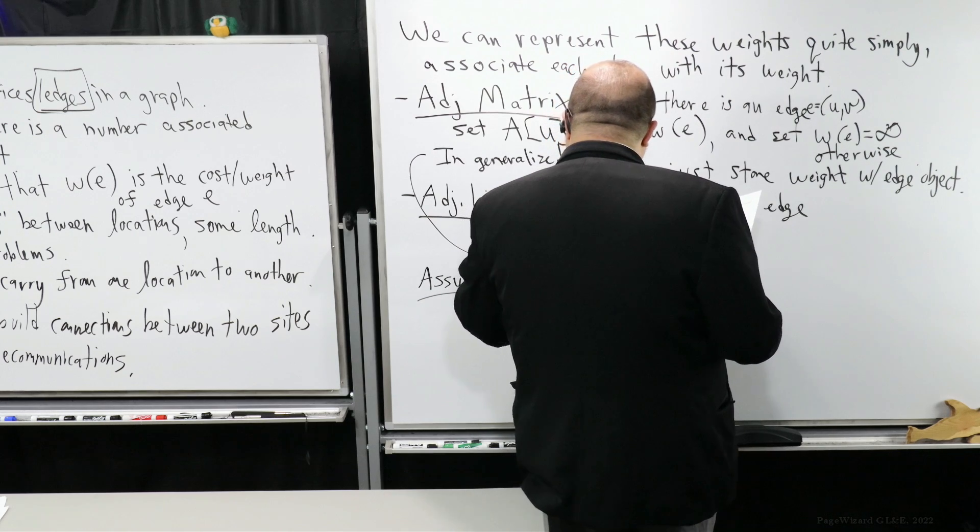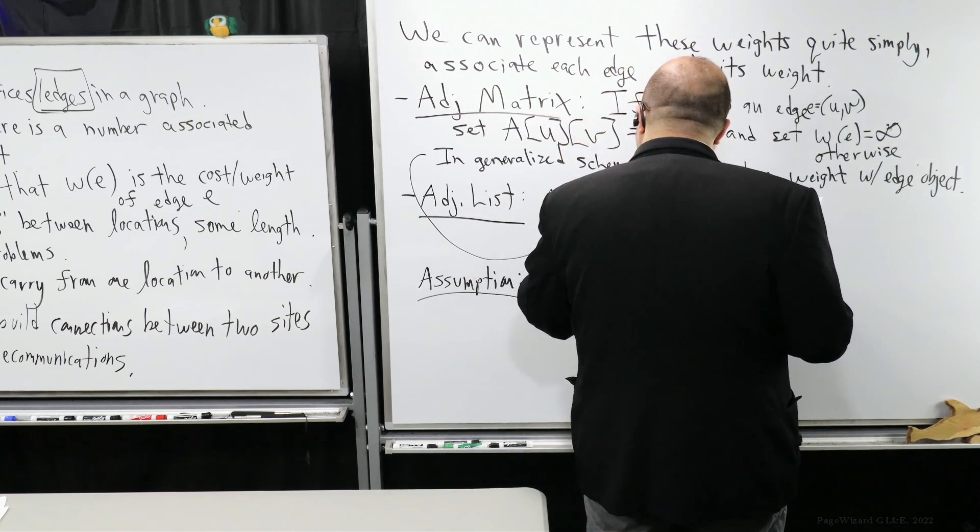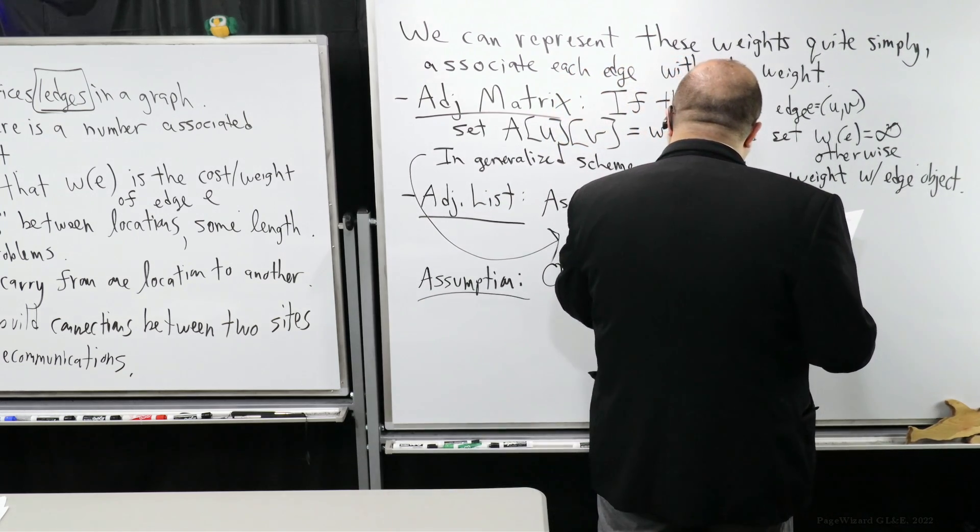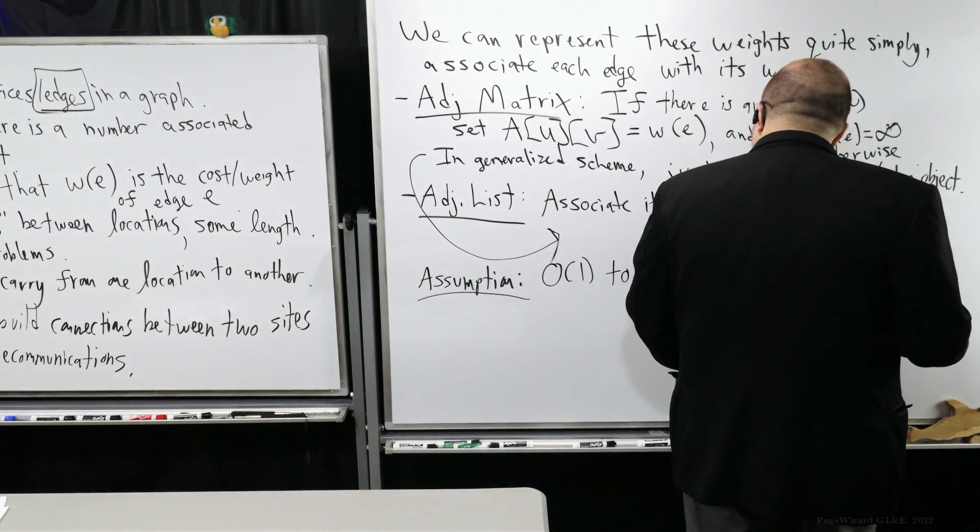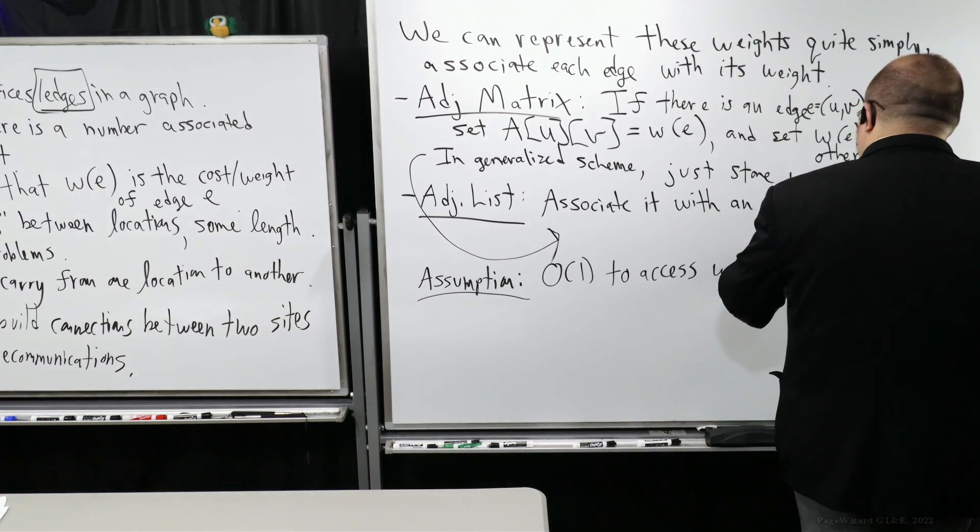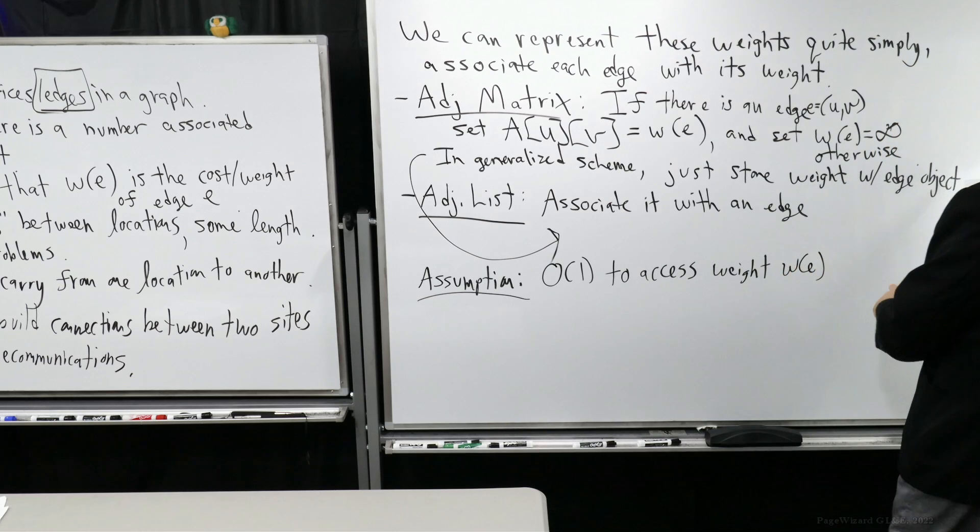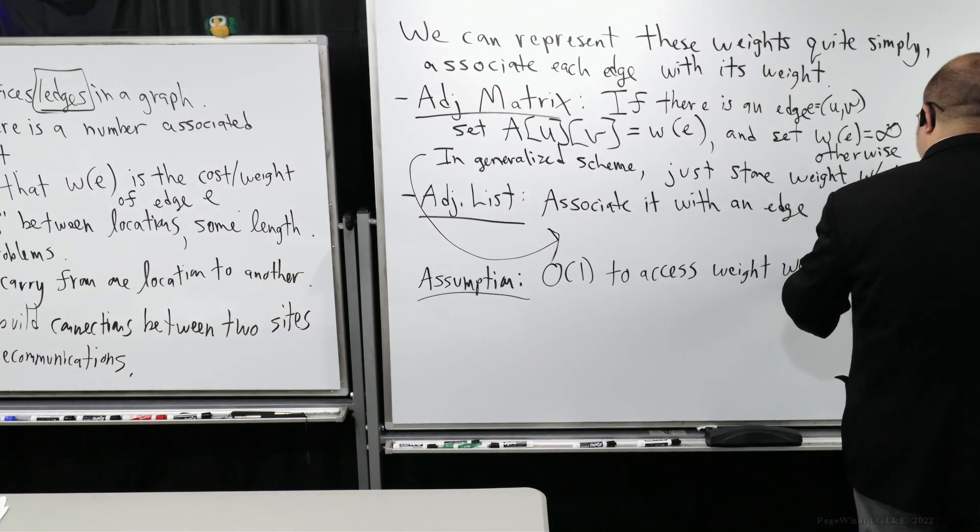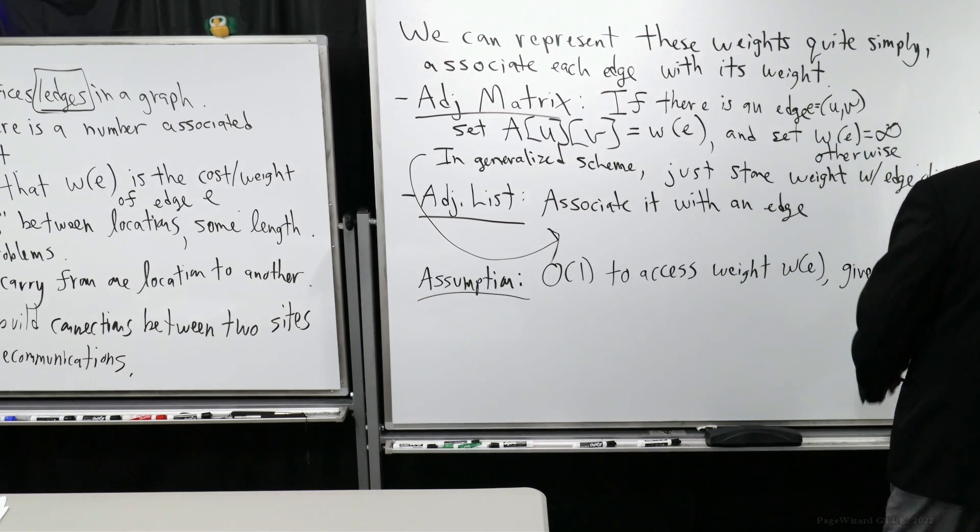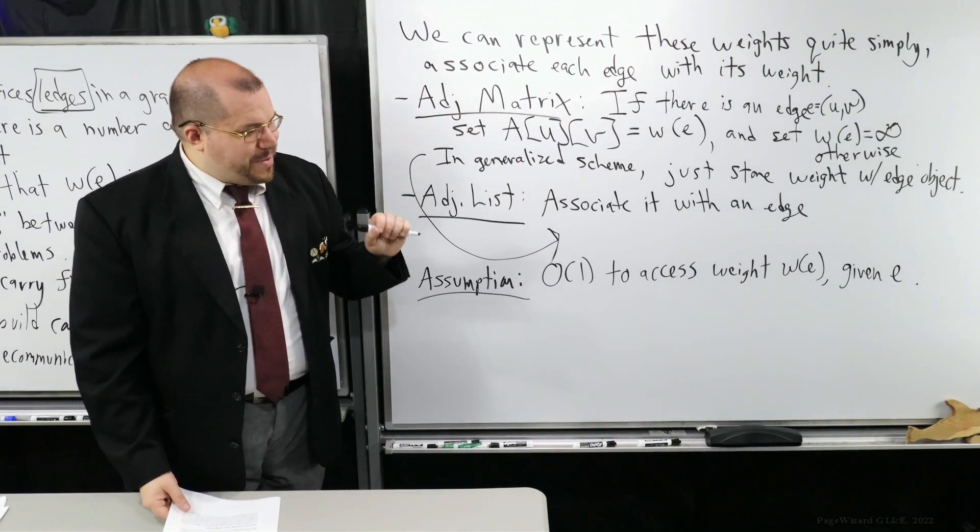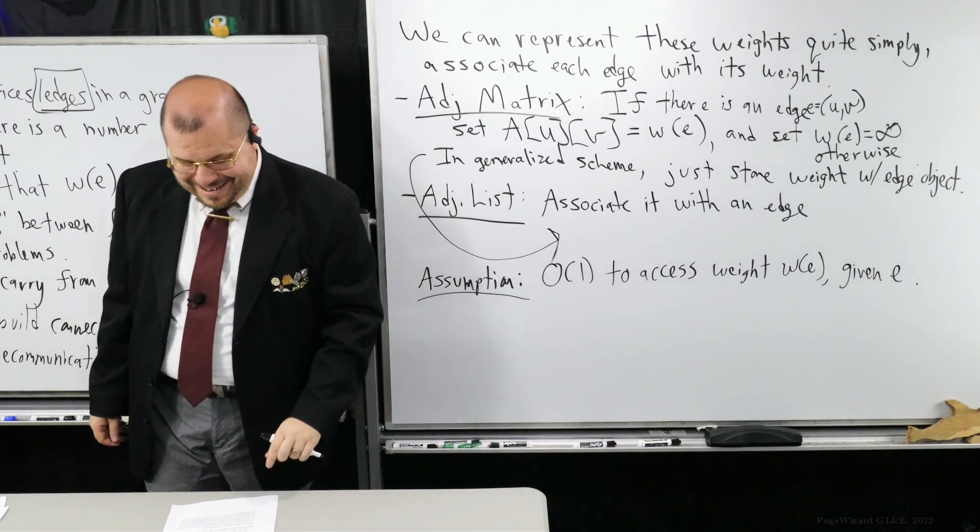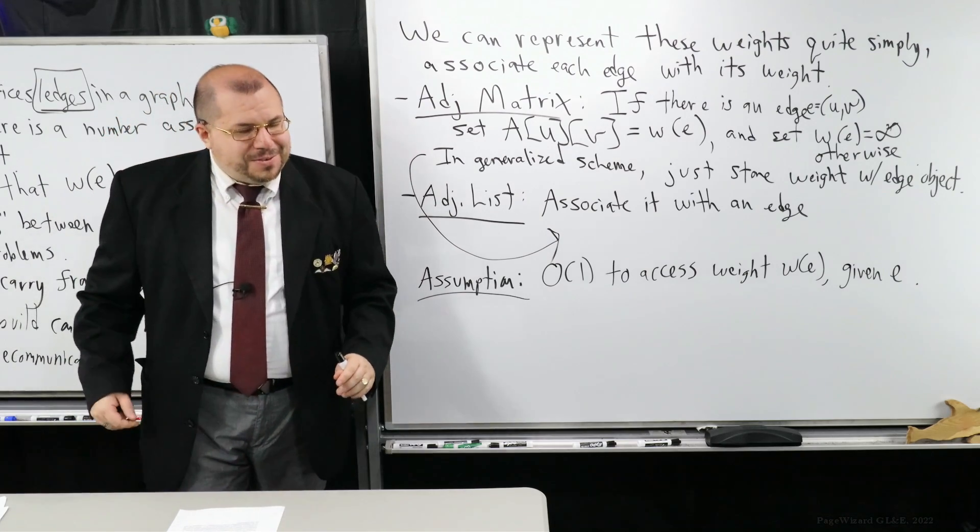That being said, in all of these configurations, if you have access to an edge, you have access to the weight. A big assumption in the way you're implementing this, and it's a fairly straightforward assumption, it should be fairly easy to implement this. The assumption is that it takes constant time to access the weight of edge E, given E. That's something I'm going to make a presumption about in this discussion.